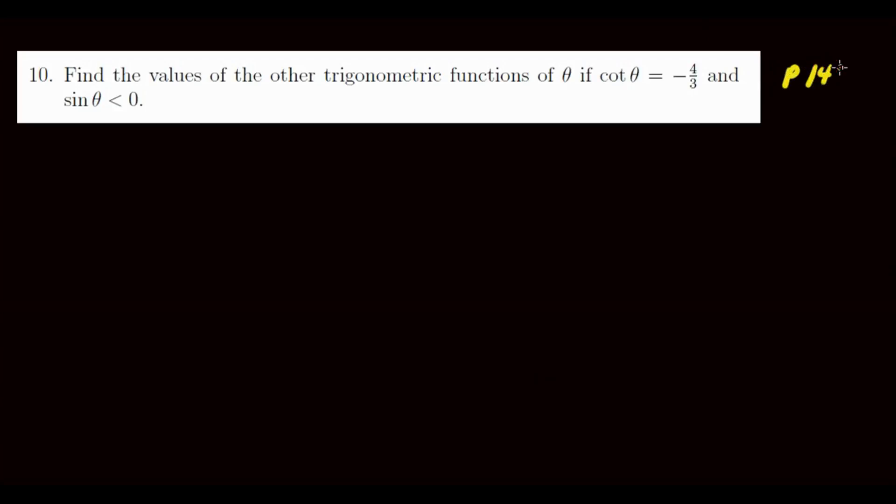We're going to find the values of the other trigonometric functions of theta if cotangent theta is negative four-thirds and sine theta is less than zero. You can find this problem on page 143 of your learner's material.